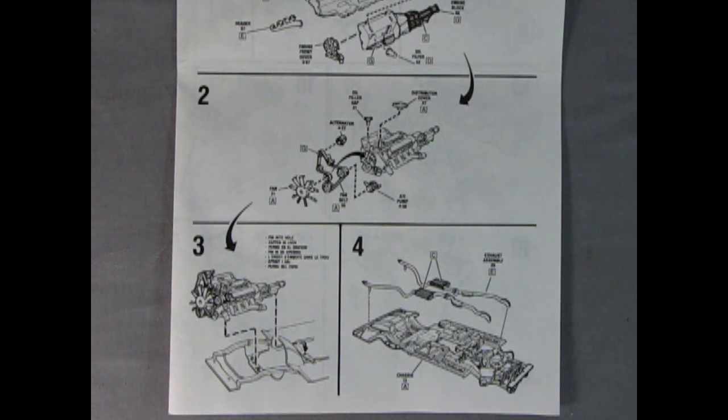Our engine build continues in panel two where you put on the distributor cover, the oil filler cap, alternator, fan belt, pulley assembly, AC pump, and our fan. Then you drop that into the chassis and then you attach up our exhaust manifold system.